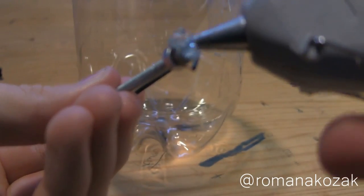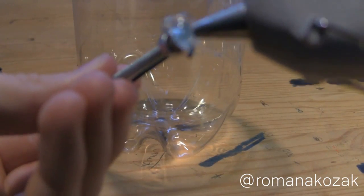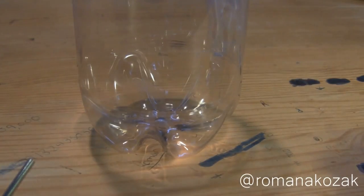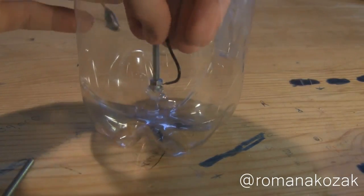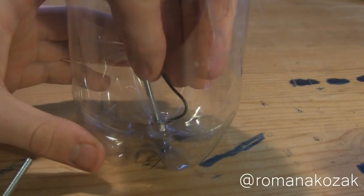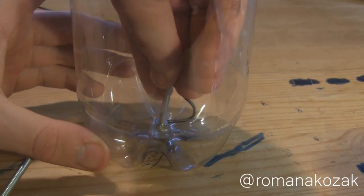Next put a fair amount of hot glue on the black wire and screw and then stick this right in the center of the water bottle. Hold it there for a couple seconds to make sure it dries.